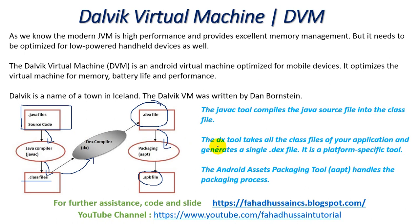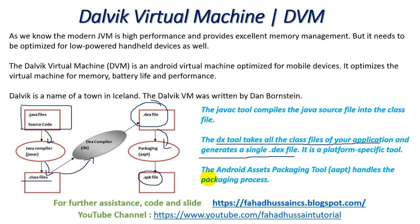The JavaC compiler tool compiles the Java source file into the .class file. The dx tool then takes all the .class files of your application and generates a single .dex file — it is a platform-specific tool. Finally, the Android Assets Packaging Tool, which we call AAPT, handles the packaging process, and your file is ready as the final .apk file.